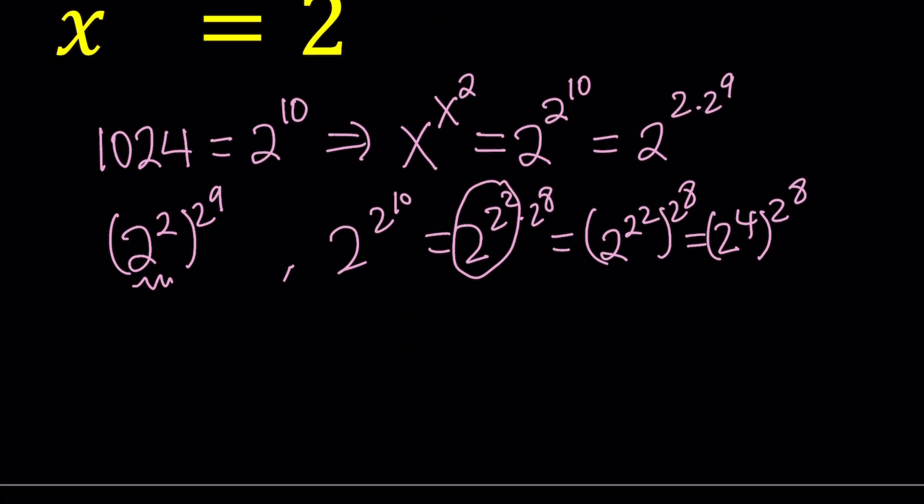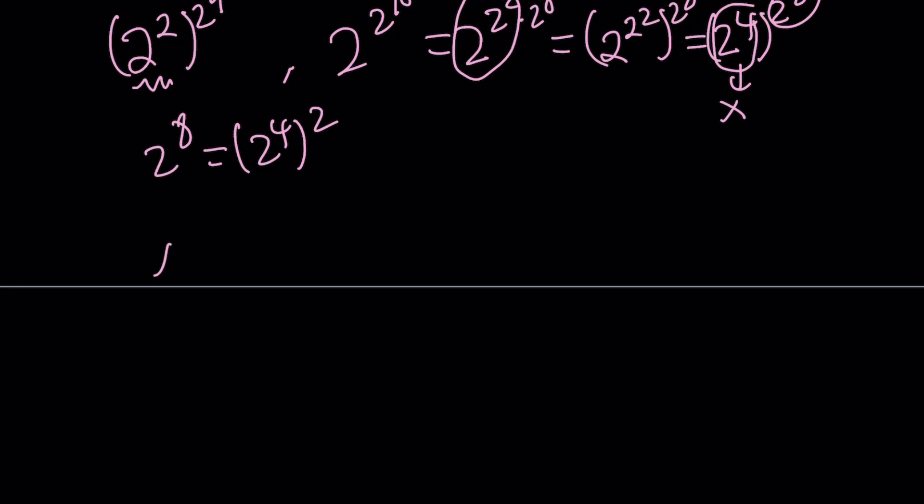Now we know that 2 to the 8th power is 2 to the 4th power squared. Nice. So we can safely say that if x is equal to this, then x squared will equal to that and we'll be good to go. So in other words, x equals 16 is a solution.